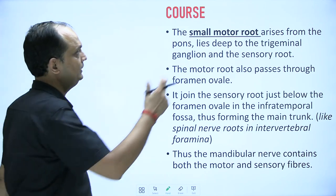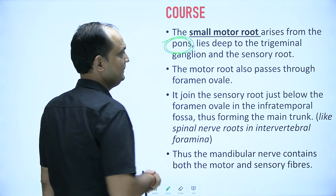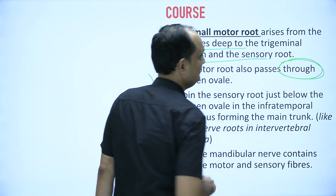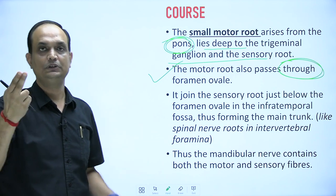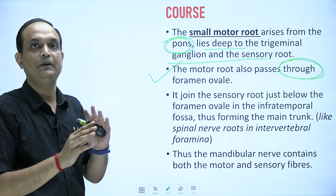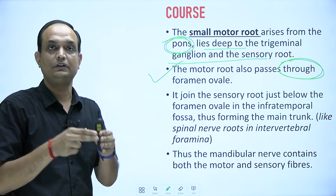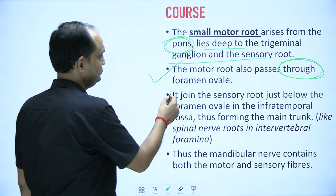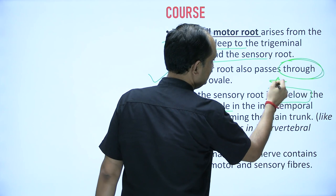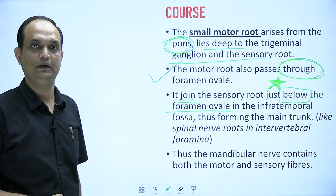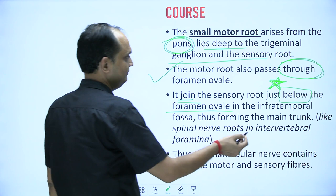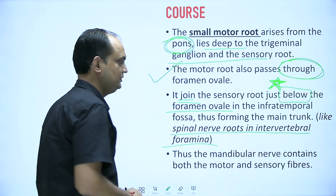The small motor root arises from the pons as a separate nerve. It lies deep to the trigeminal ganglion and the sensory root. The motor root also passes through the foramen ovale, but both nerves do not merge inside the cranial cavity. The formation of the mandibular nerve trunk occurs outside the foramen ovale — the motor root joins the sensory root just below the foramen ovale, in the infratemporal fossa.